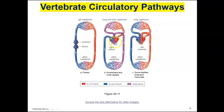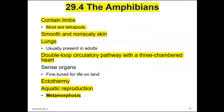Amphibians have two atria and one ventricle. The blood from each atrium mixes in the ventricle. The ventricle pumps blood to the lungs and the skin to receive oxygen, comes back to the heart, then gets pumped to the rest of the body, and then back to the heart again. Starting with the amphibians we have a double-loop circulatory system and a three-chambered heart, and then moving into the mammals we have a four-chambered heart.